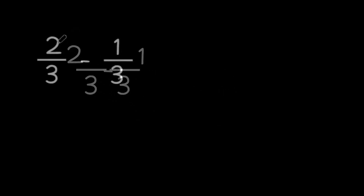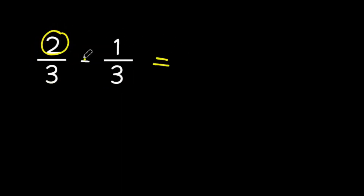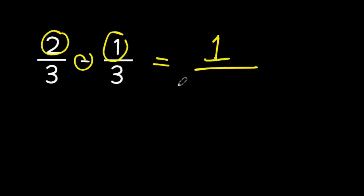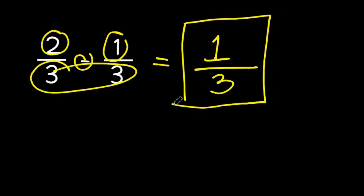Imagine we have the rational numbers two-thirds and one-third. How do we subtract them? To subtract two-thirds and one-third, we simply subtract the numerators. Two minus one is equal to one. The denominator remains the same — three. So the result of subtracting two-thirds and one-third is equal to one-third.